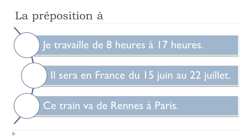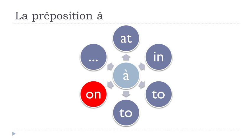The last example is: 'Ce train va de Rennes à Paris' — in that case we just put the names of the towns. So whether it's 'à 17h', 'au 22 juillet', or 'à Paris', it's the 'to' concept combined with 'de' for the from-to structure. Remember that 'de' with articles will change, so in that case it would be 'to'.